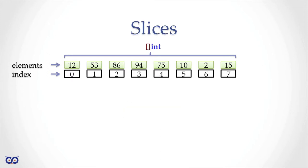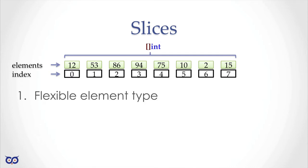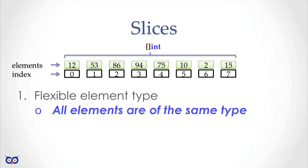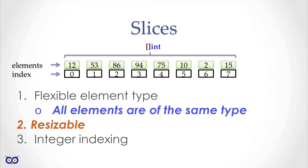When we come to slices, they look very much like arrays with the same features. We use a slice the same way we use an array — element types are the same — but now we have something that can actually grow beyond the initial size, and we still have non-negative integer indexing.